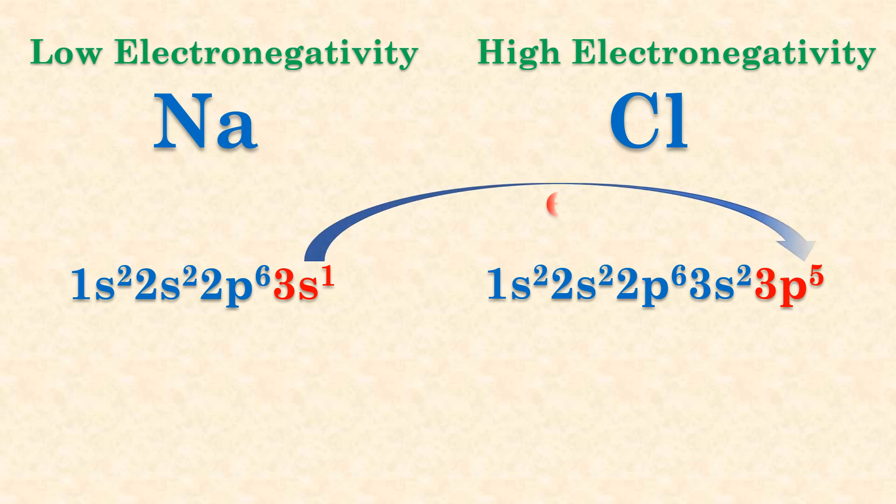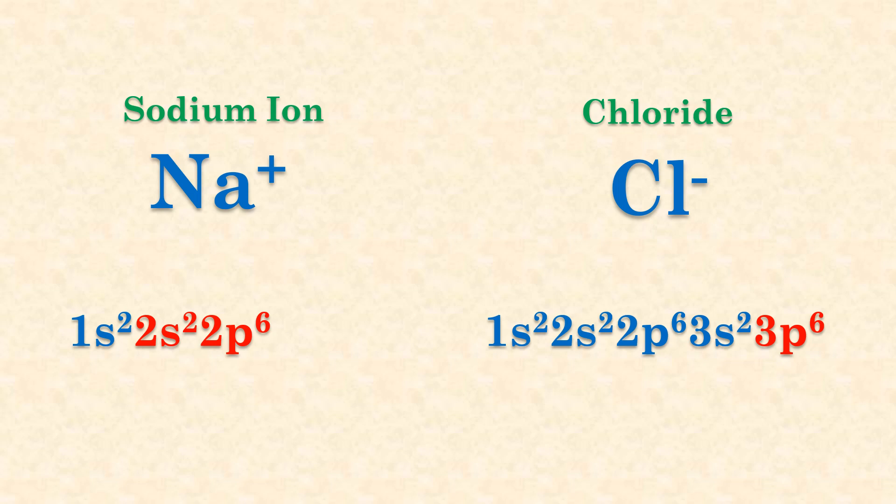This means that sodium will easily donate one electron to chlorine. This results in the sodium cation and chloride anion.